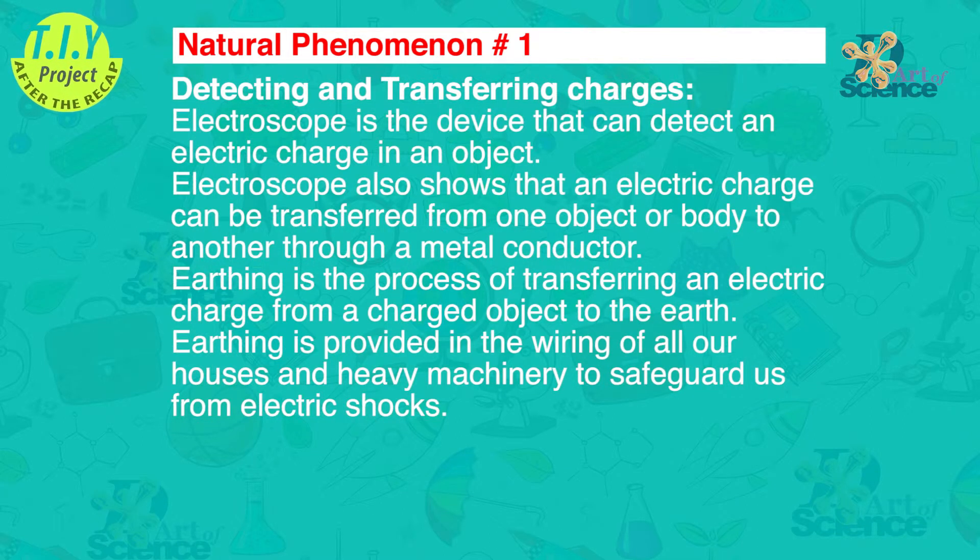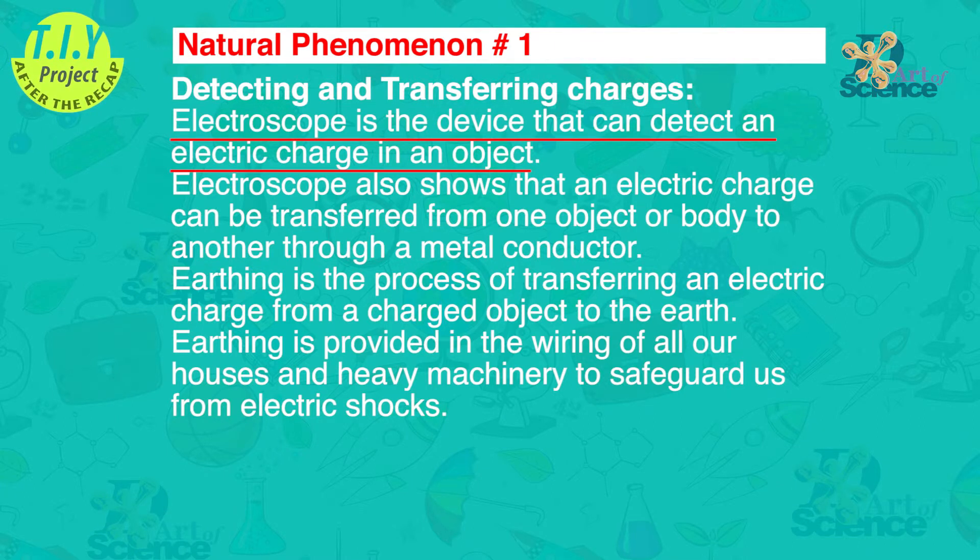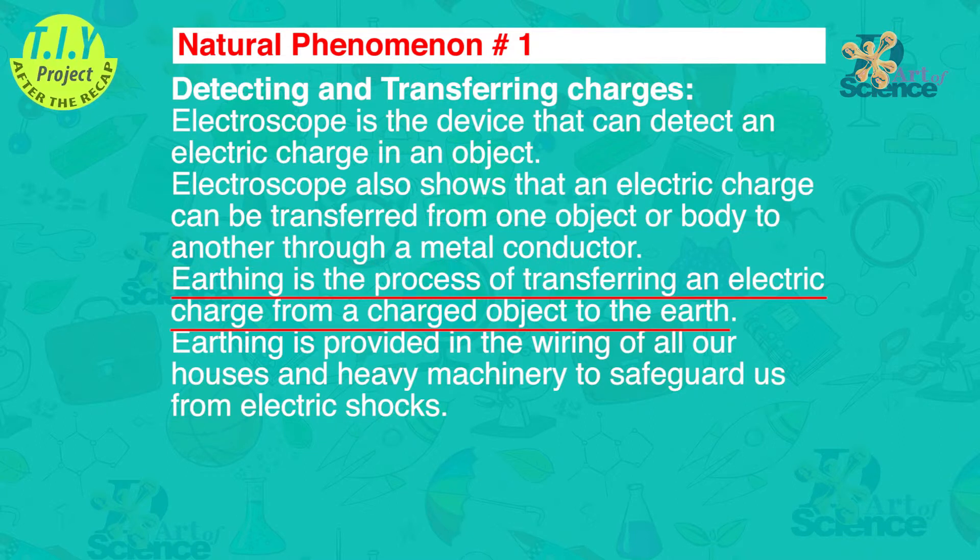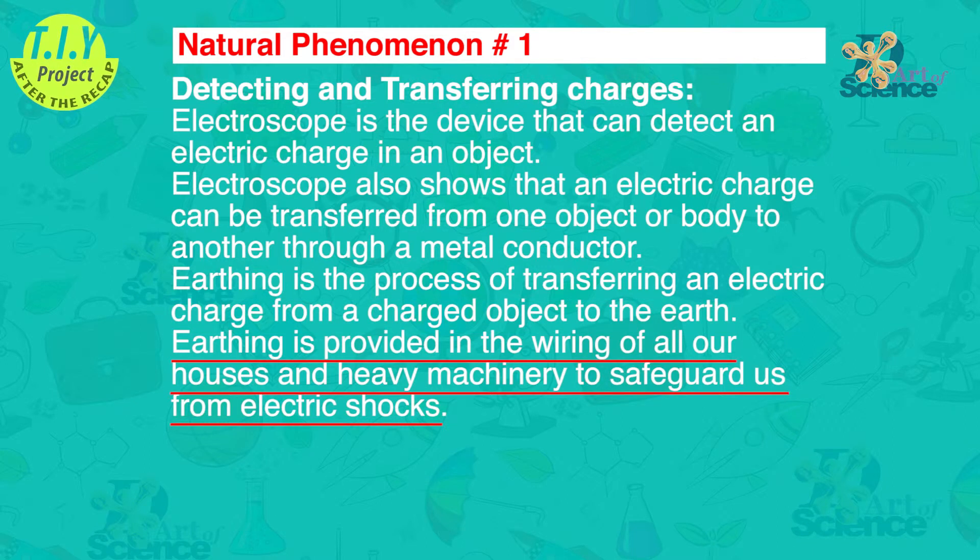Detecting and transferring charges. Electroscope is the device that can detect an electric charge in an object. Electroscope also shows that an electric charge can be transferred from one object or body to another through a metal conductor. Earthing is the process of transferring an electric charge from a charged body to the earth. Earthing is provided in the wiring of all our houses and heavy machinery to safeguard us from electric shocks.